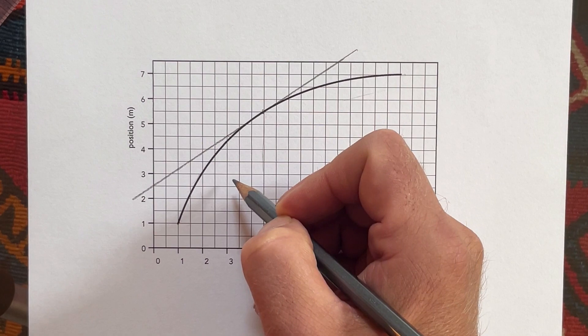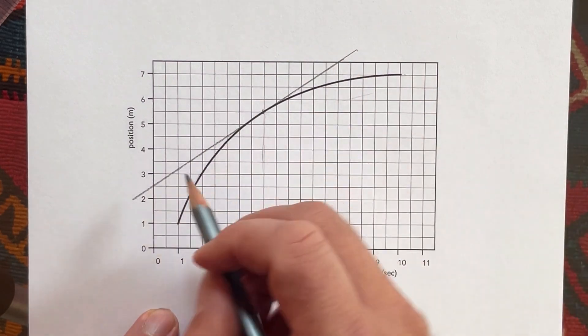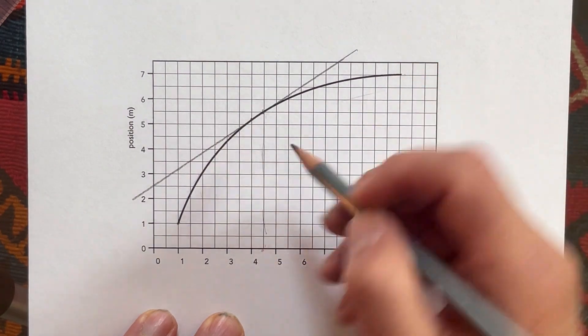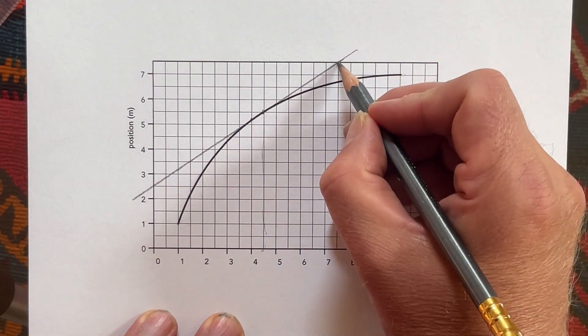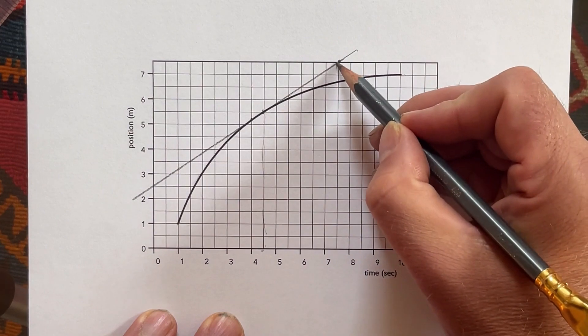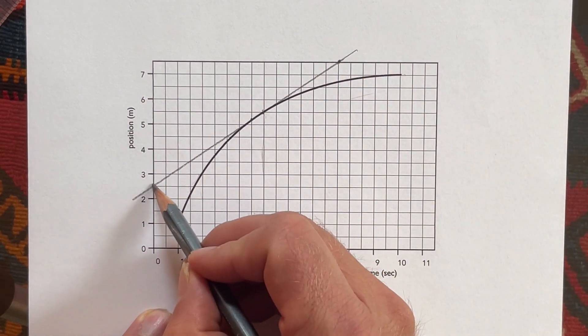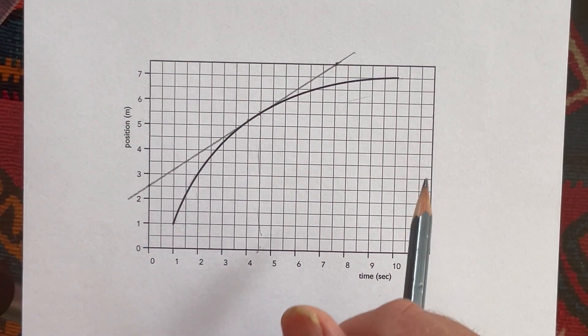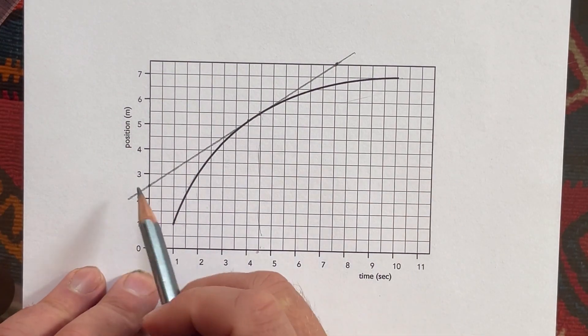And I can find the slope of this. So now here's my tangent line here at the 4½ second mark, and I'm going to find the slope by looking at this point and this point. And recall that slope is rise over run. So let's look at this.